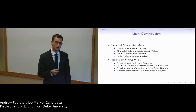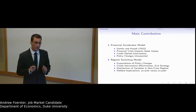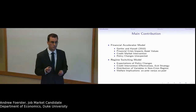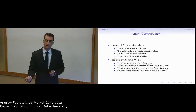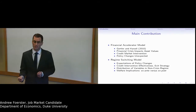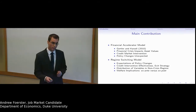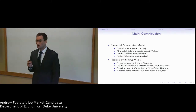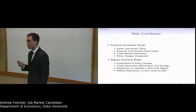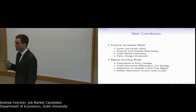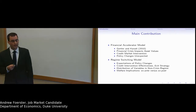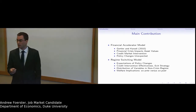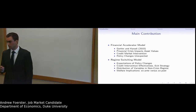The regime switching model says that households and agents in the economy expect financial crises to occur with some small probability, and then conditional on a financial crisis occurring, the central bank may or may not step in — there will be some probability that they come in and intervene in credit markets.